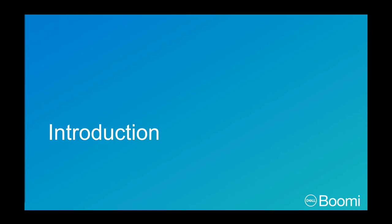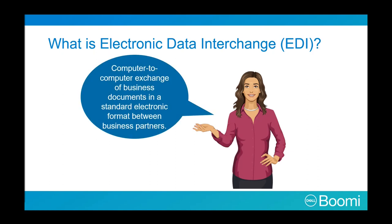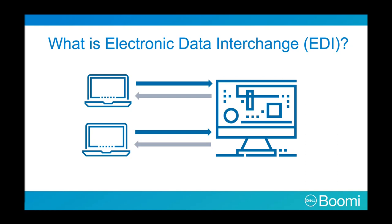Let's begin by defining EDI. As defined by EDIBasics.com, EDI is a computer-to-computer exchange of business documents in a standard electronic format, such as X12 or EDIFACT, between business partners, which are commonly referred to as trading partners. EDI replaces snail mail, fax, and email. While those methods have documents handled by people — slowing processing and introducing errors — EDI documents flow straight through to the receiver's computer and begin processing immediately. The most common EDI documents exchanged between businesses are purchase orders, invoices, and shipment notices.